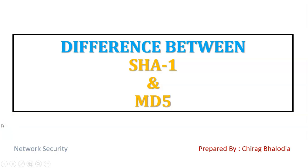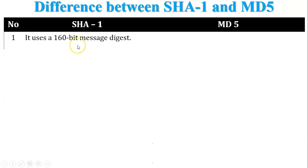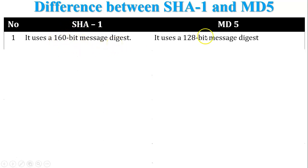Hello friends, in this video I am going to discuss the difference between SHA1 and MD5, a topic of network security. The first difference is the output, or message digest: SHA1 produces a 160-bit output and MD5 produces a 128-bit output.